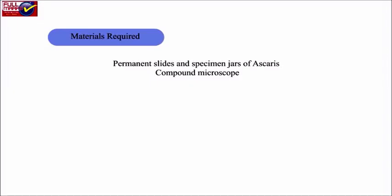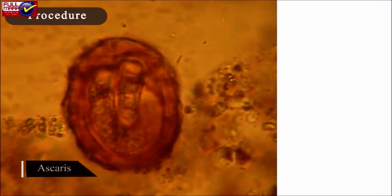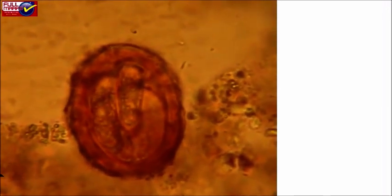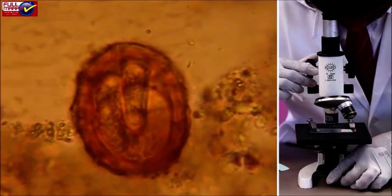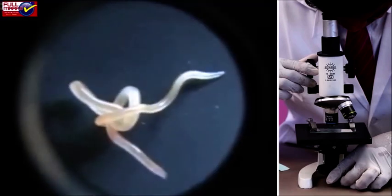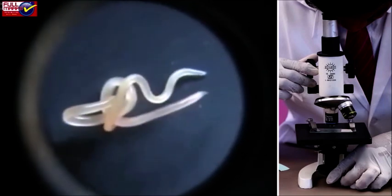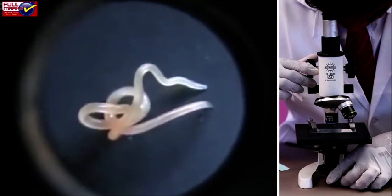Materials Required: Permanent Slides and Specimen Jars of Ascaris, Compound Microscope. Procedure: Ascaris or Roundworm is one of the common parasites found in the intestine of human beings. Observe the permanent slide of Ascaris under compound microscope. Note down the features of organism in the practical record book. Draw labeled diagram of the Ascaris observed.